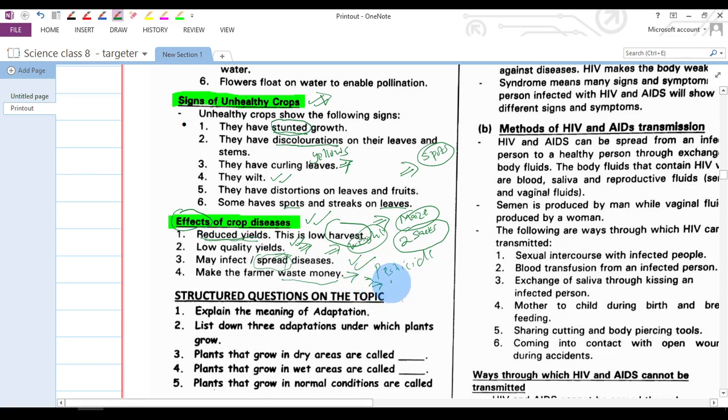Compared to the input that the farmer has invested in that land, thereby making the farmer waste a lot of money for that time of waiting, harvesting, paying laborers and all of that. And that is effects of crop disease.